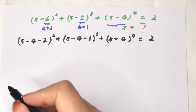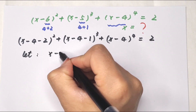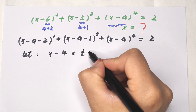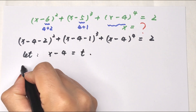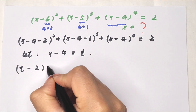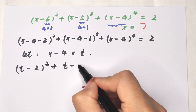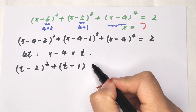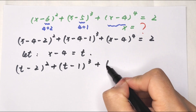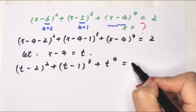Then we let x minus 4 equal t, so the equation becomes (t minus 2) to the power of 2 plus (t minus 1) to the power of 3 plus t to the power of 4 equals 2.